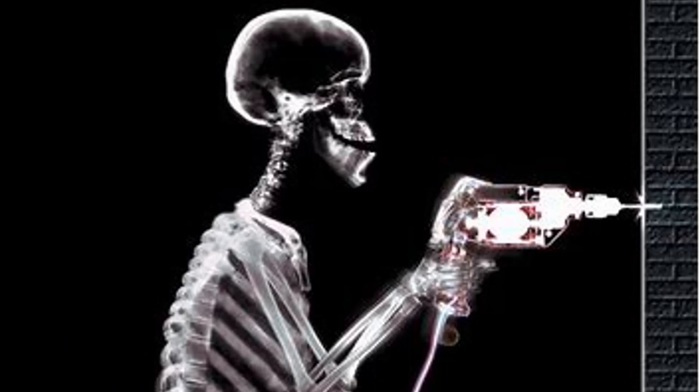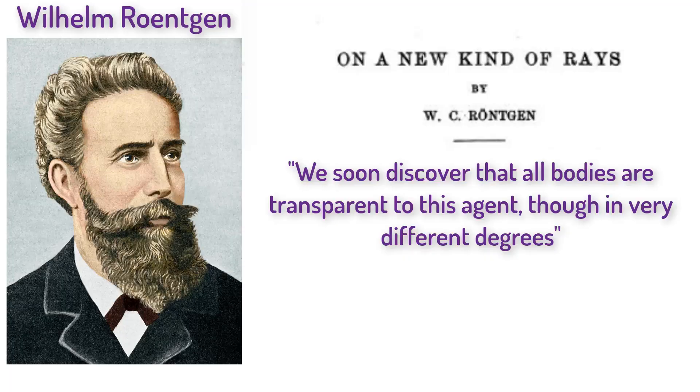Röntgen also knows that X-rays have a penetrative power to degree hereto though unknown. Röntgen started to hold up various items in front of his screen, from a thousand page book, a pack of cards, rubber and metal plates. Röntgen wrote, we soon discovered that all bodies are transparent to this agent, though in very different degrees. He then determined that the density of the object was the decisive feature for its transparency to X-rays.